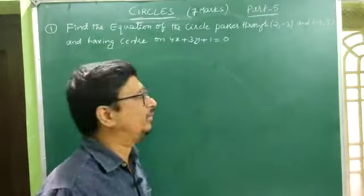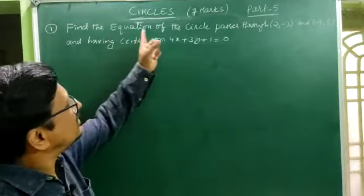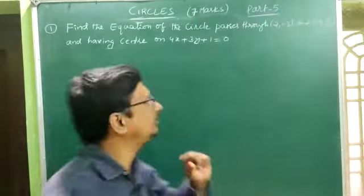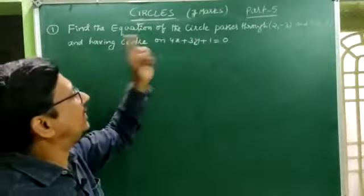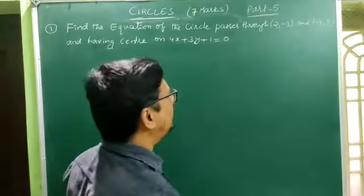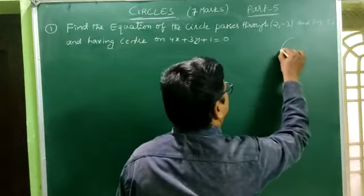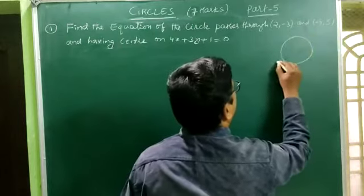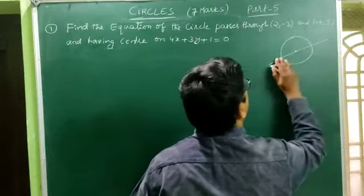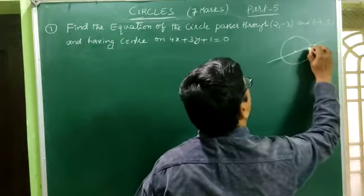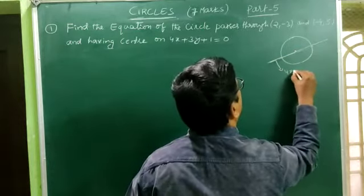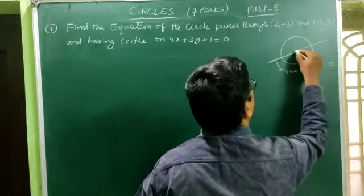Now let's see the problem. Find the equation of the circle passing through (2, -3) and (-4, -5) and having the center on the line 4x + 3y + 1 = 0. First suppose this is the circle and the center of the circle lies on this line. So center lies on the line 4x + 3y + 1 = 0.